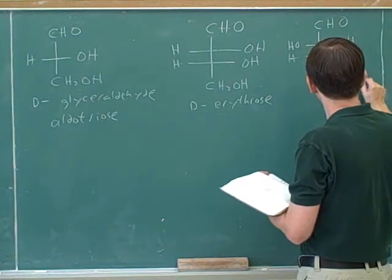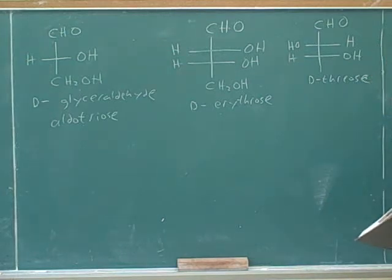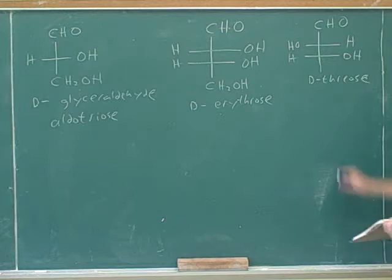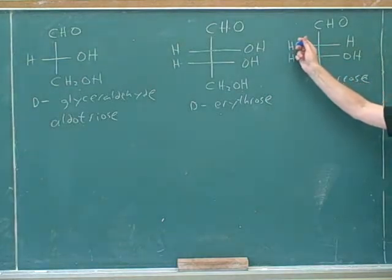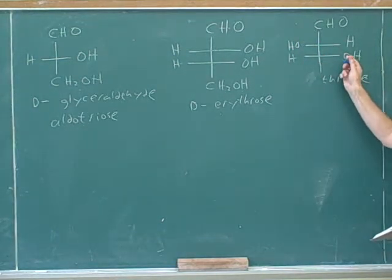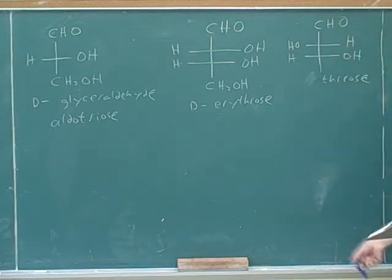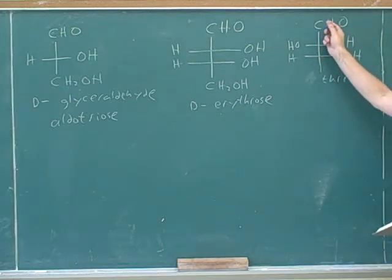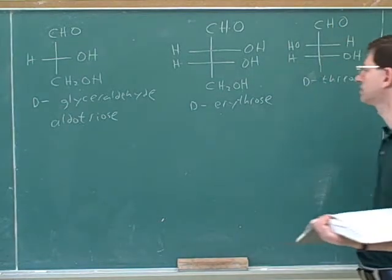Students ask if these structures need to be memorized; the instructor confirms that structures will be provided. The carbonyl goes at the top, and D or L is determined by the bottom stereocenter. This is D-threose, where even though the upper hydroxyl is pointing left, all that matters is the bottom stereocenter. CHO stands for aldehyde.